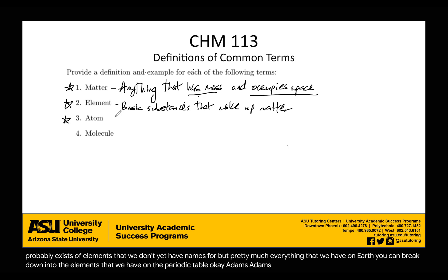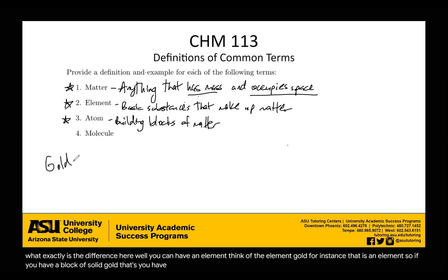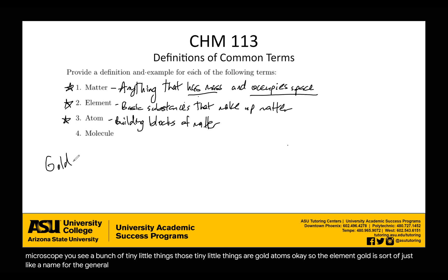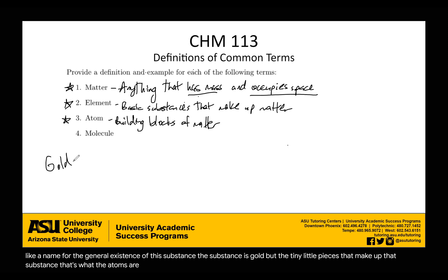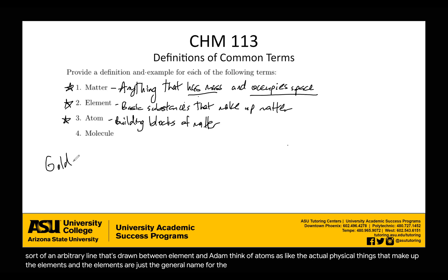Next, atoms — these are like the building blocks of matter. What exactly is the difference between an element and an atom? Well, think of the element gold. If you have a block of solid gold, that's your elemental gold — it's just pure gold. But if you were to look at that gold under a microscope, you'd see a bunch of tiny little things, and those tiny little things are gold atoms. The element gold is a name for the general existence of this substance, but the tiny little pieces that make it up — that's what atoms are. Think of atoms as the actual physical things that make up the elements, and elements as the general name for the group of all those atoms.